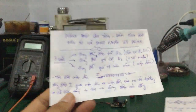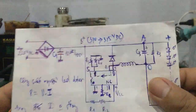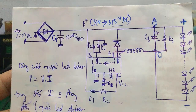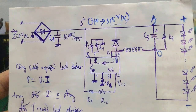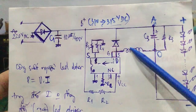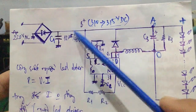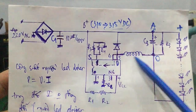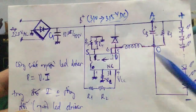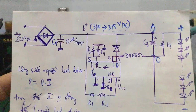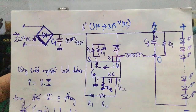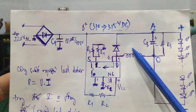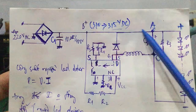Đối với những mạch nguồn LED driver, cuộn dây cũng tác dụng tương tự. Dòng điện lúc đầu trong chu kỳ đầu sẽ qua tụ C3, nạp điện cho cuộn dây. Cuộn dây sẽ tích lũy một từ trường. Khi dòng điện ngắt, nó sinh ra một dòng điện cảm ứng và nó nạp lại cho tụ C3.